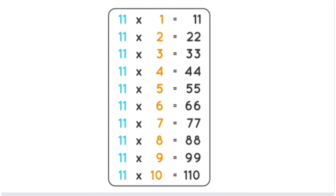11 ones are 11. 11 twos are 22. 11 threes are 33. 11 fours are 44. 11 fives are 55.